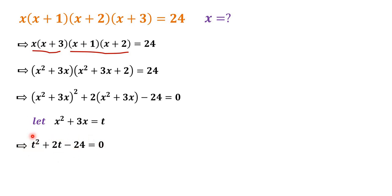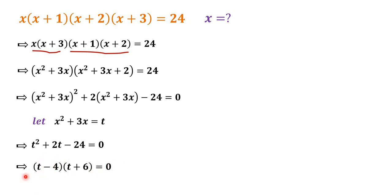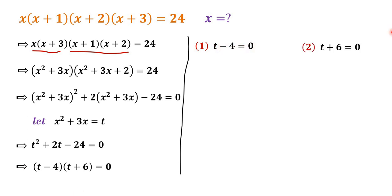So how do we solve this? We can factorize negative 24 as 6 times negative 4. Then we have t minus 4 times t plus 6 is equal to 0. What are the roots of this quadratic equation? We have two cases: the first case is t minus 4 is equal to 0, and the second case is t plus 6 is equal to 0.